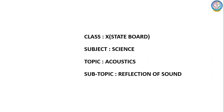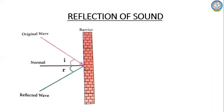When sound waves travel in a given medium and strike the surface of another medium — here is an air medium and here is a solid medium which is nothing but a brick — the sound waves are bounced back into the first medium. This reflected wave comes back into air. This is what we call reflection.